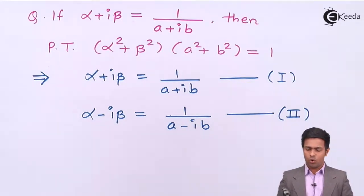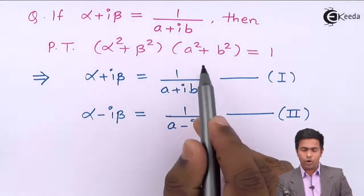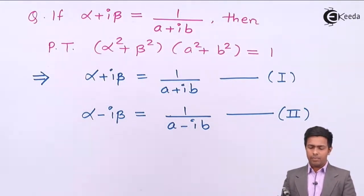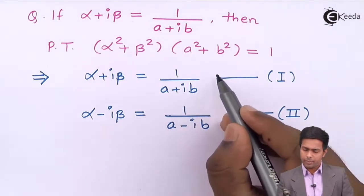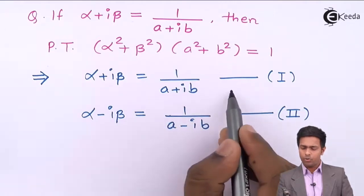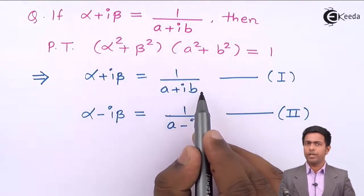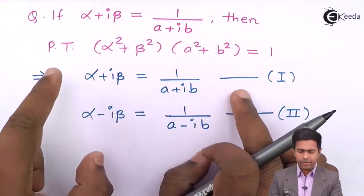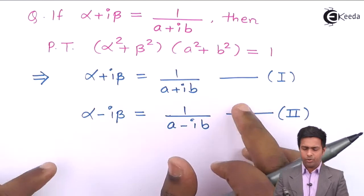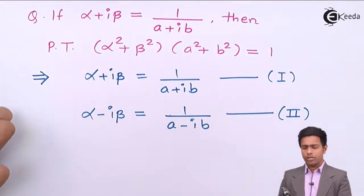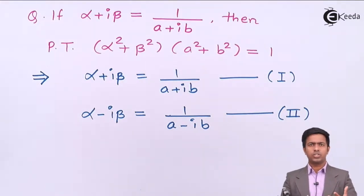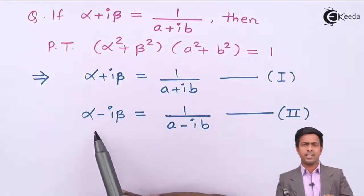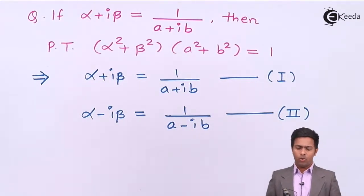If you want to derive this relation, what you have to do is remove the complex number from the denominator on the right hand side by multiplying numerator and denominator by the conjugate a minus ib. By doing that the complex number in the denominator is removed, and you get a new complex number in standard form. Comparing with the left hand side gives the values of alpha and beta. Instead of doing that, I'm just using the concept of conjugate directly, so the value of alpha minus i beta is 1 upon a minus ib.